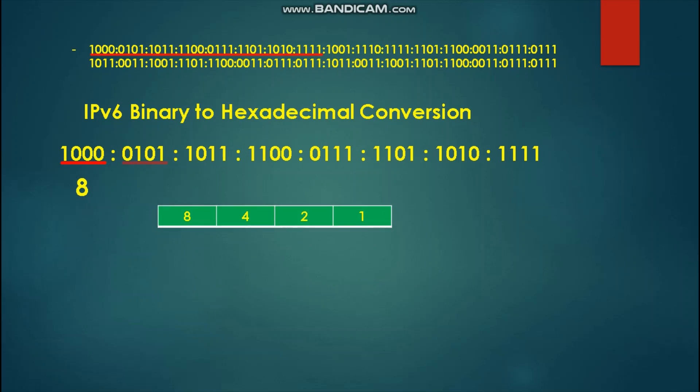Next, we solve for 0-1-0-1. Placing it under our table, the binary 1s give us 4 plus 1, which is equal to 5. We place 5 as our hexadecimal result.